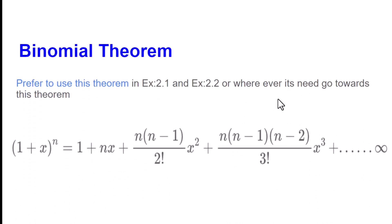First, as I have told you, this will be used in exercise 2.1 and 2.2. Binomial Theorem is that you have (1 + x)^n which equals 1 plus nx. This will be multiplied by x, like nx plus n(n-1)/2! x².